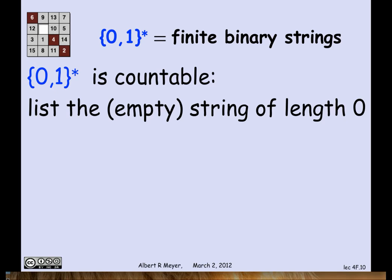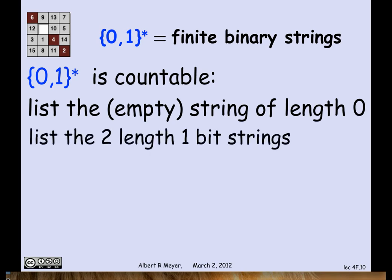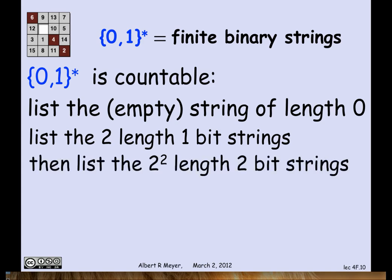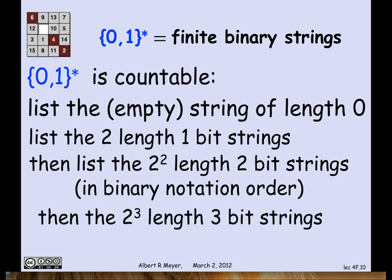Here's how to list them in order. Start off with the length 0 strings. There's only one of those, the empty string. Then list all the length 1 strings of bits, namely the string 0 followed by the string 1. Then let's list all the length 2 strings of bits. There are four of those, and we'll list them in binary notation order. Likewise, there are eight length 3-bit strings, which we can list starting from 0, 0, 0, up to 1, 1, 1, in order as though they were binary numbers. And continuing in this way, I have just described to you how to list every finite binary string, which means exactly that the finite binary strings are countable.